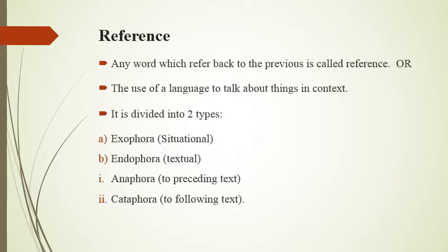The second type is endaphora, which refers to any particular word in the text. This endaphora can be in the preceding text or in the following text. On this basis, endaphora is divided into two types: anaphora and cataphora. Anaphora refers to any detail in the preceding text that is already mentioned before. For example, 'Wash and core six cooking apples, put them into a fireproof dish' — this 'them' is anaphora, referring to the six cooking apples.